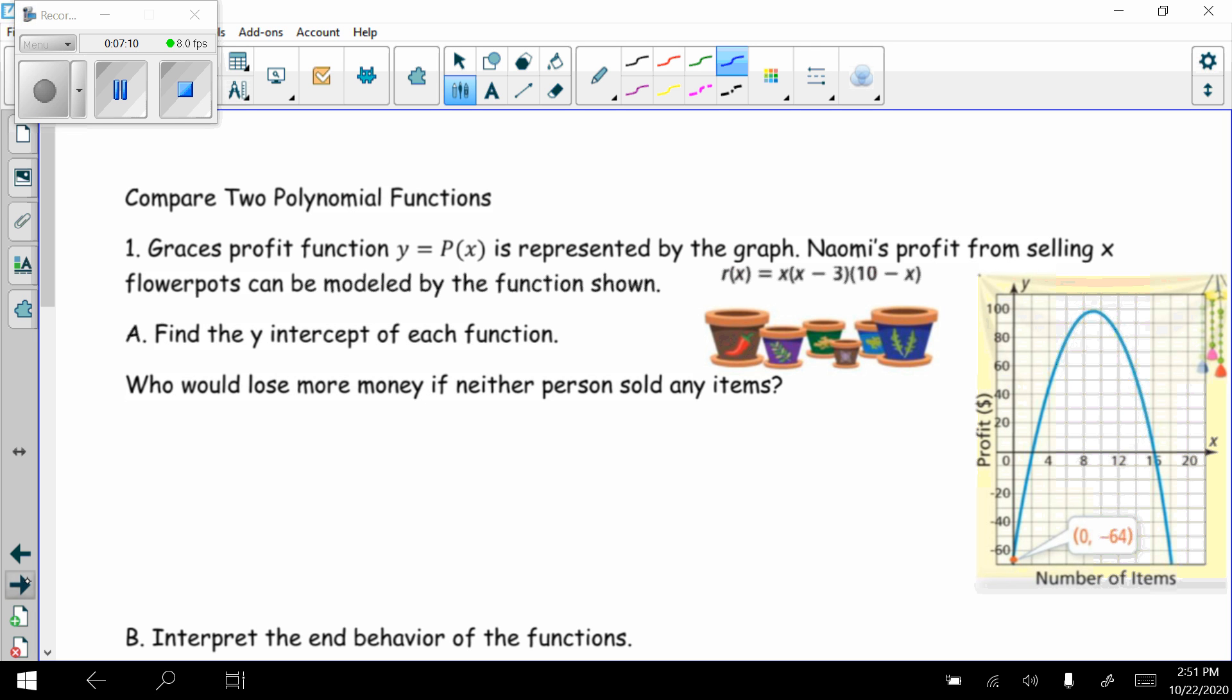It tells me that Grace's profit function, y = P(x), is represented by the graph. They give me this parabola opening down, and they show me that this is (0, -64). Naomi's profit from selling x flowerpots can be modeled by the function r(x) = x(x - 3)(10 - x). First, find the y-intercept of each function. Who would lose more money if neither person sold any items?